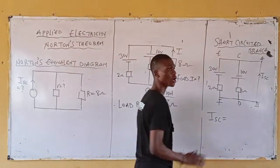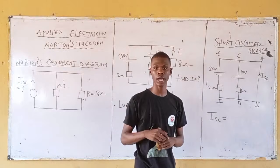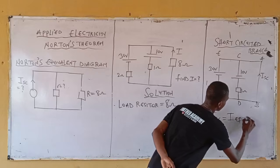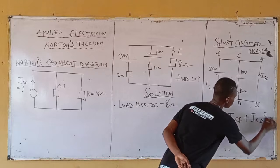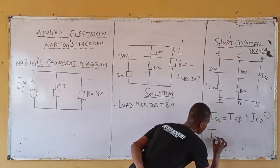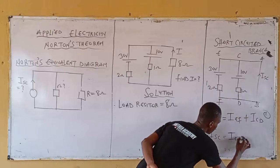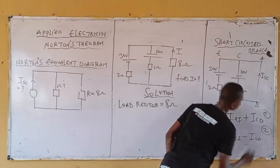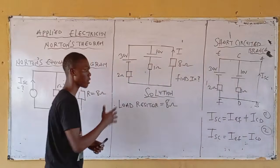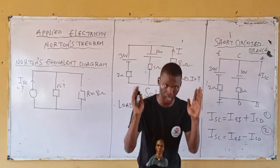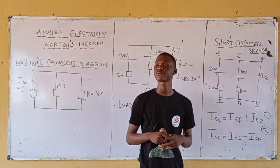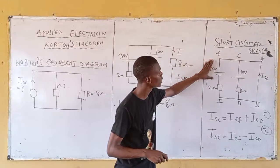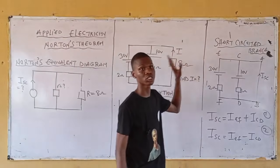Now I want the answer from you. Let's say you have: equation one — I_sc equals IEF plus ICB; and equation two — I_sc equals IEF minus ICB. Between one and two, which formula applies for I short-circuit? The currents are going in different levels — because the orientation of the battery in branch EF is different from branch CD.